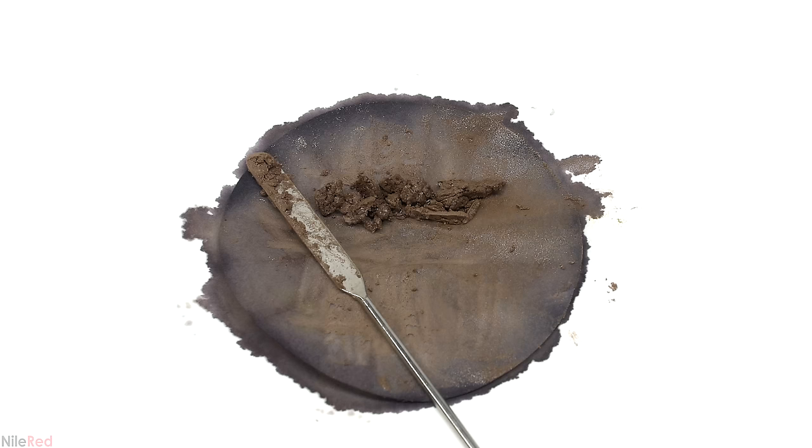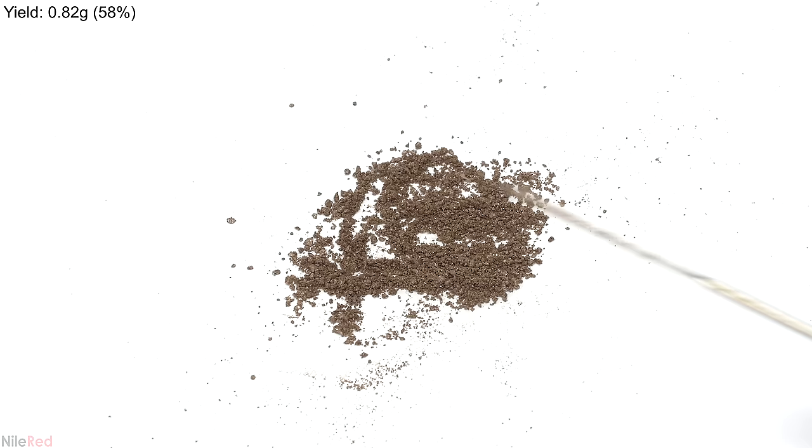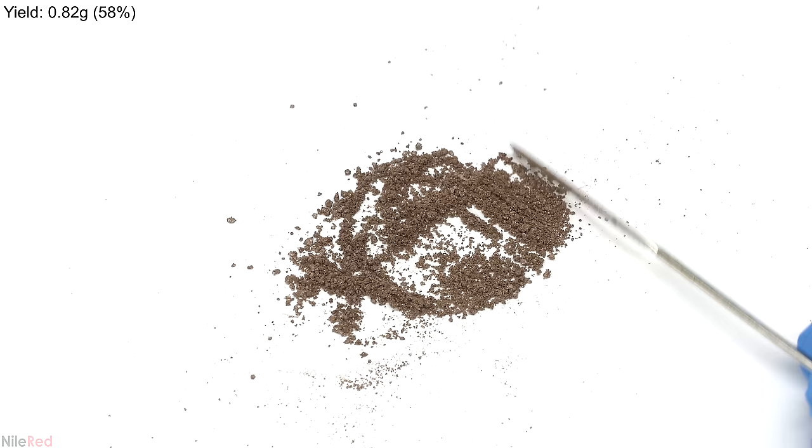After a few hours it was relatively dry so I scraped it off the filter paper. I chopped it up into smaller pieces and I dried it further for a couple hours. Once it was as dry as it was gonna get I measured the yield which came out to be about 0.82 grams.